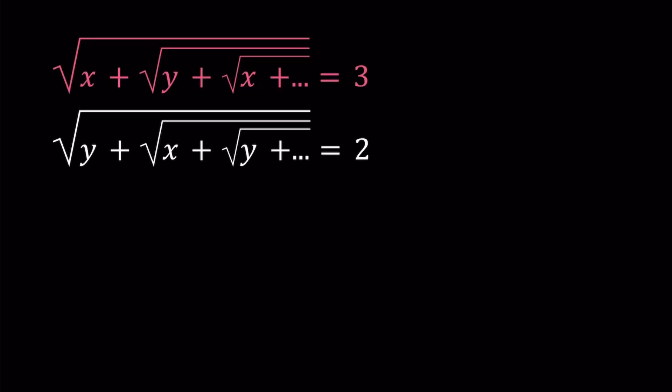So we have this system, the square root of x plus the square root of y plus the square root of x, so on and so forth, equals 3. And we have the square root of y plus the square root of x plus the square root of y, so on and so forth, equals 2. This is a system,